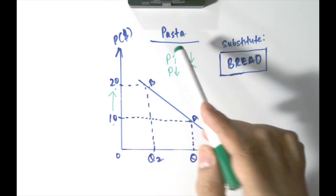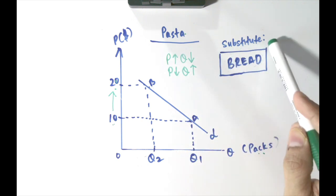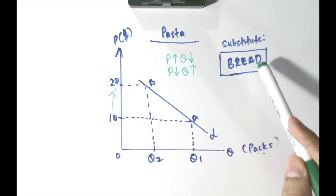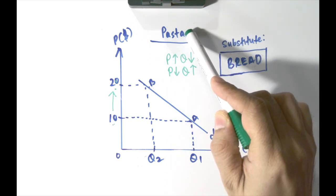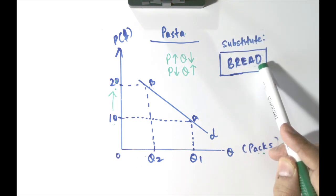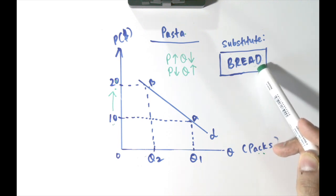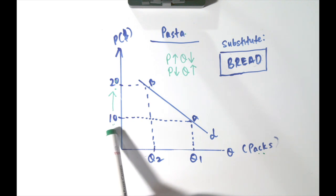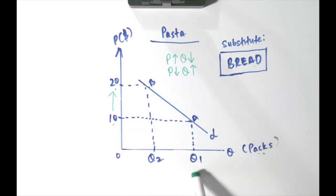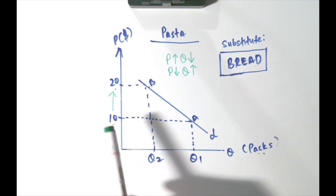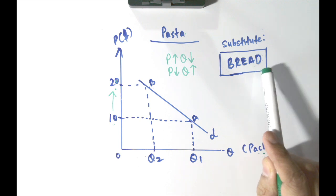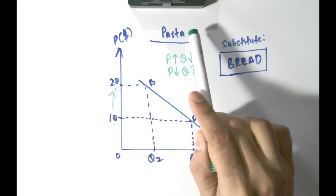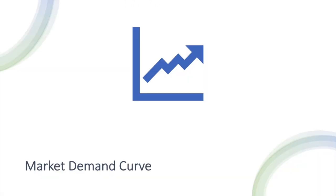The second reason for the inverse relationship is the substitution effect. A substitute for pasta would be bread. As a rational consumer, when the price of pasta increases, you will search for a cheaper alternative, which in this case is bread. When the price was $10, you were consuming more pasta. But when the price increases from $10 to $20, you will reduce your consumption of pasta and allocate the money to buy more bread, because bread is much cheaper. That is the substitution effect.